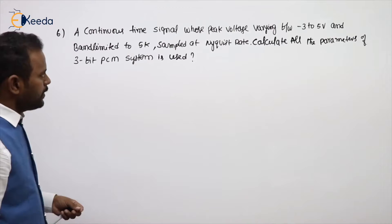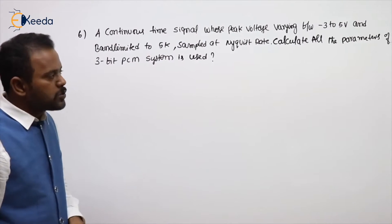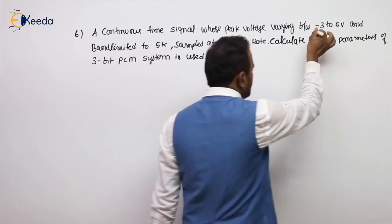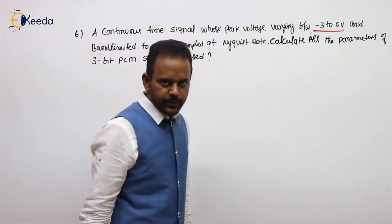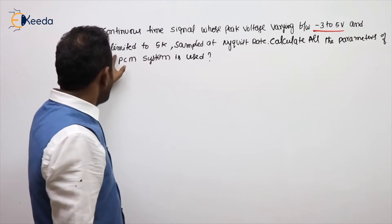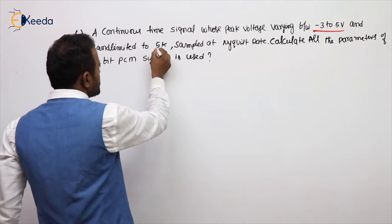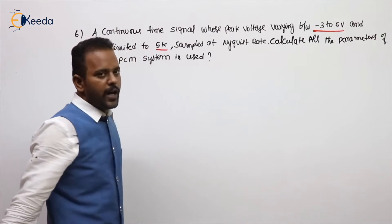See the problem on PCM. A continuous time signal whose peak voltage varies between -3 to 5V and band limited to 5 kHz sampled at Nyquist rate. Nyquist rate means 2Fm, we already know.